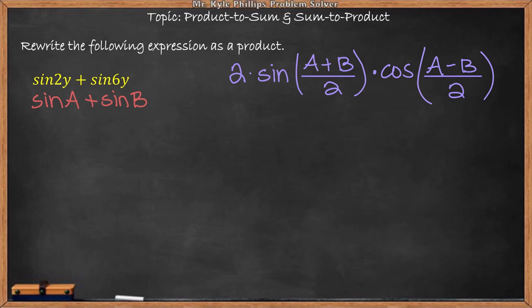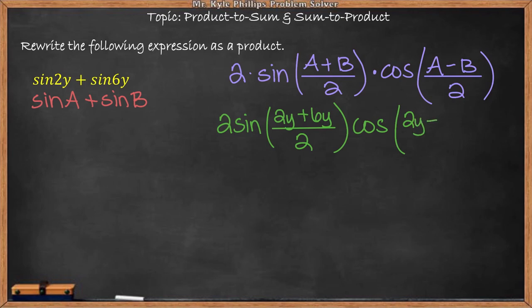Now I know that everywhere I see an A, I'm going to write 2y, and everywhere I see a B, I'm going to write 6y. So here I have 2 sine of (2y+6y)/2 times cosine of (2y-6y)/2.